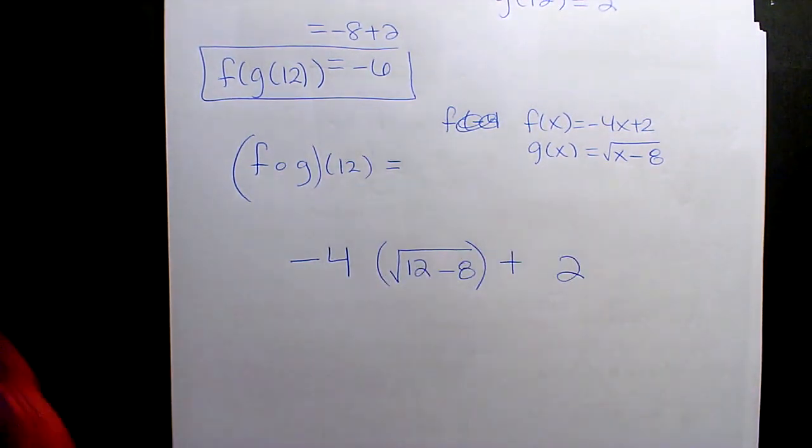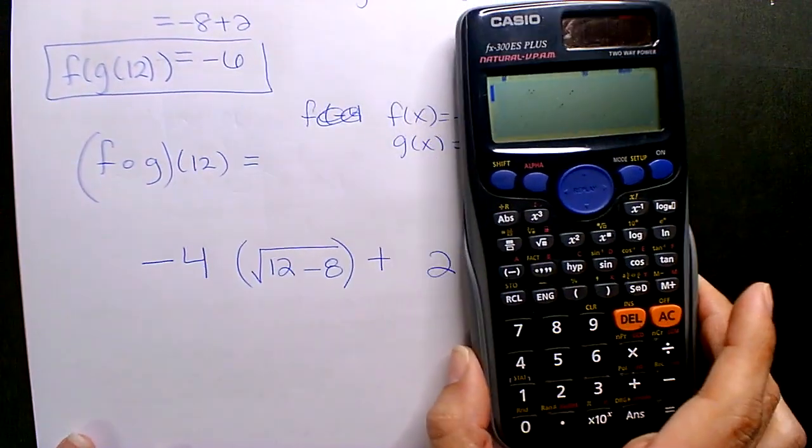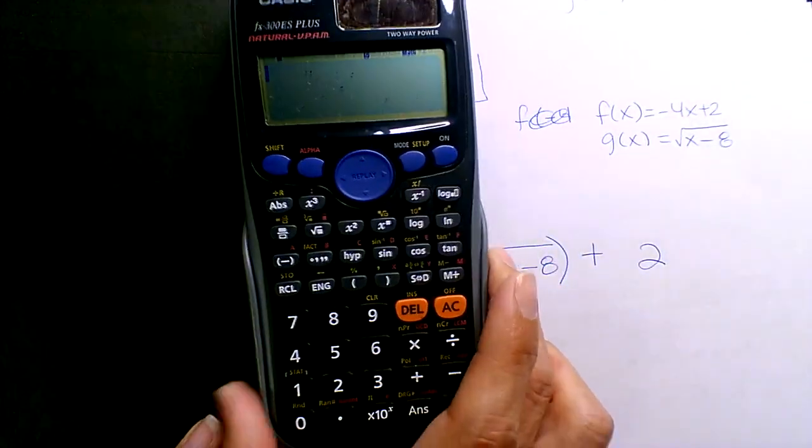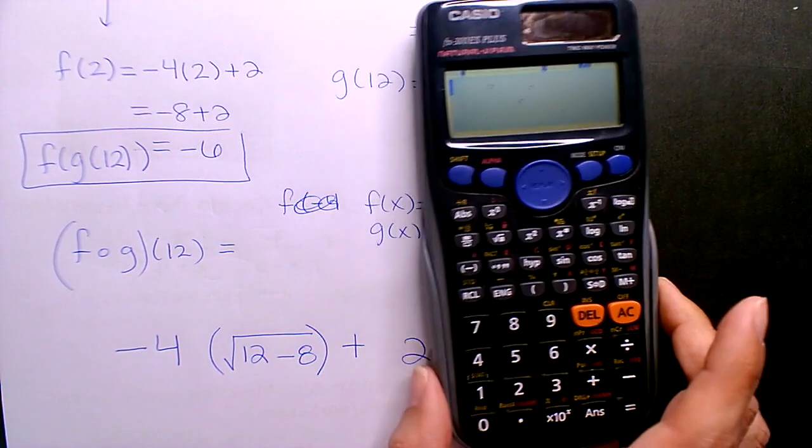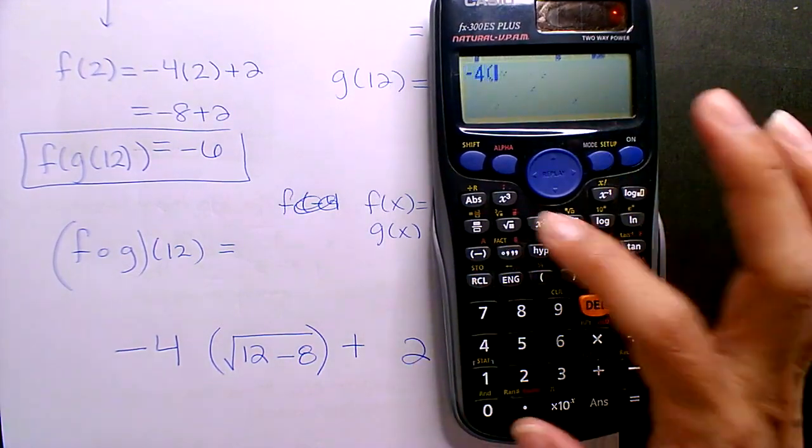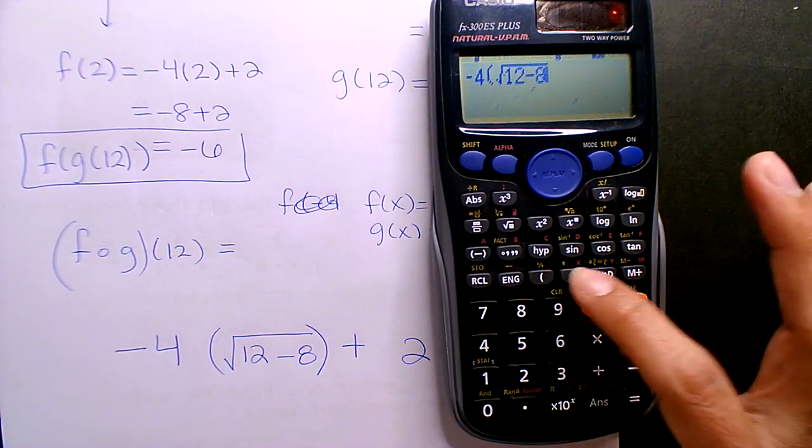So if you were to throw that into a calculator... Let's find light. Alright, it's like dead center. Whatever. Okay, so negative 4, parentheses, square root, 12 minus 8, out.